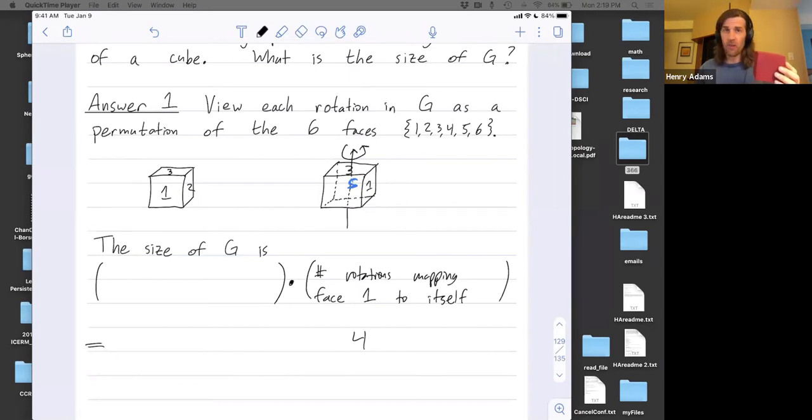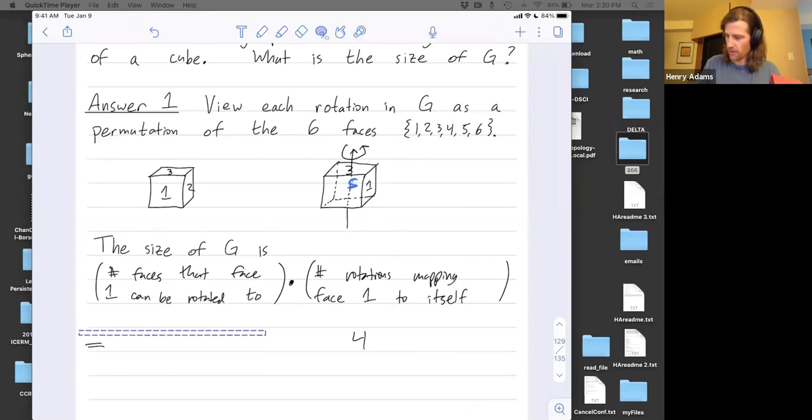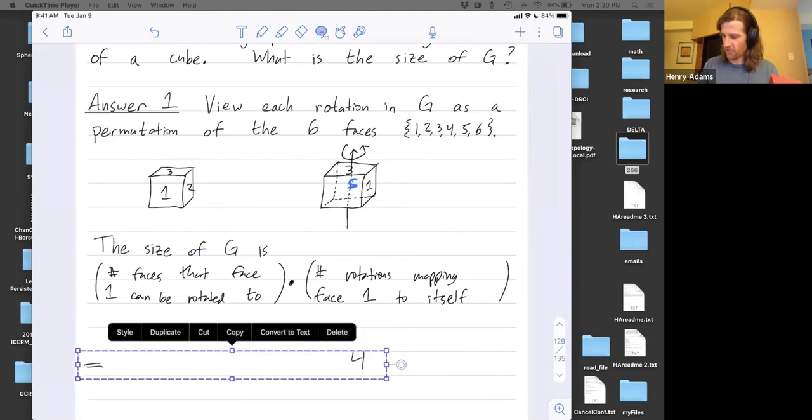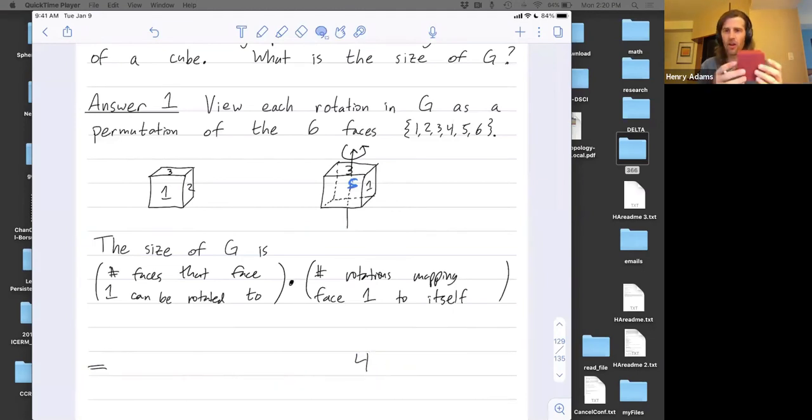We're going to multiply that by the number of faces that face 1 can be rotated to. So how many different places could I rotate face 1? Well, I could rotate face 1 onto any other face, right? There's six different faces, and I could rotate face 1 onto any of those six.